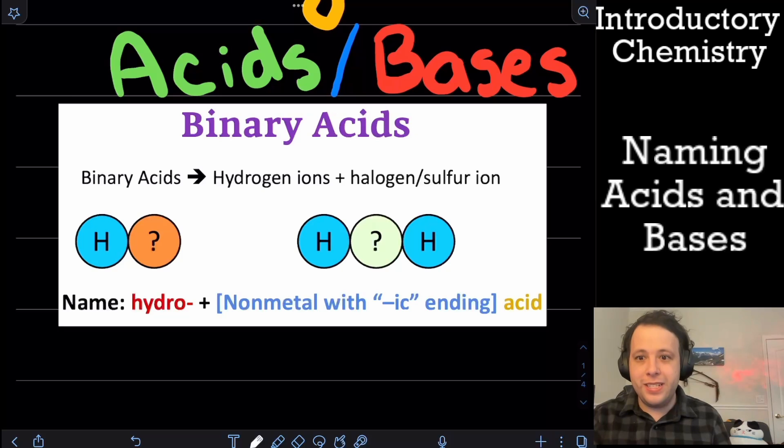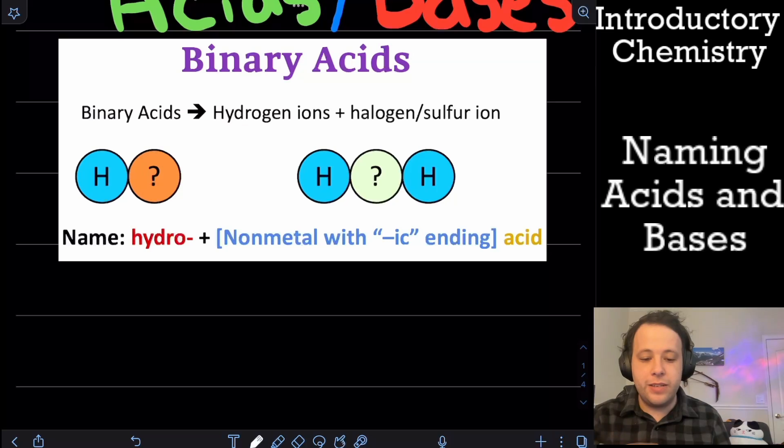So the first type is a binary acid. When you hear the word binary or bi, that means that there's two different species that we're going to be seeing. So two elements that we will have in one of these things. Every acid to write it is always going to start with hydrogen, which is going to be one of our species, followed by typically some type of halogen or a sulfur ion afterwards.